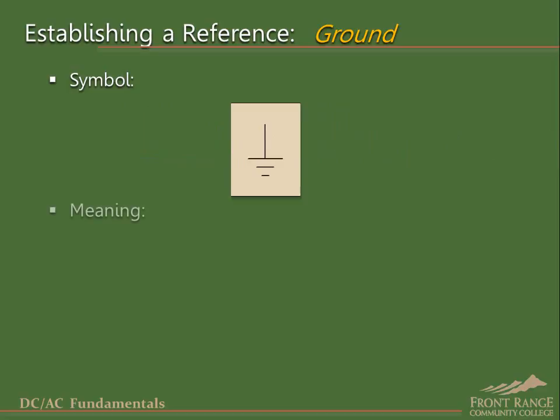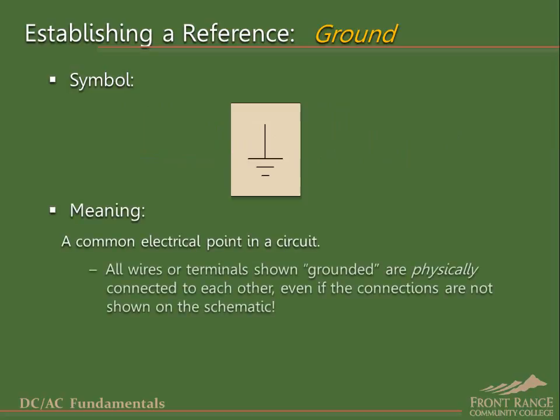As previously stated, it will be used to indicate a common electrical point in a circuit. All wires to which this symbol is attached on a schematic diagram are physically connected to each other. The conductors that make the connections will probably not be drawn on the schematic, which eliminates unnecessary clutter on the diagram.